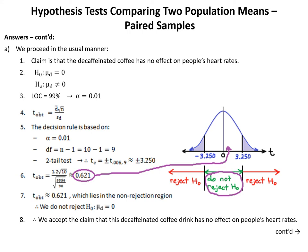Step 3: level of confidence is 99%, so alpha is 0.01. Step 4: t obtained equals D-bar times the square root of N over SD. Step 5: degrees of freedom equals N minus 1, which is 10 minus 1, or 9. For a two-tailed test, t-critical equals plus or minus t at 0.005 and 9, which is plus or minus 3.250. Step 6: t obtained equals 1.2 times the square root of 10 over the square root of 3,356 over 90, which rounds to 0.621.